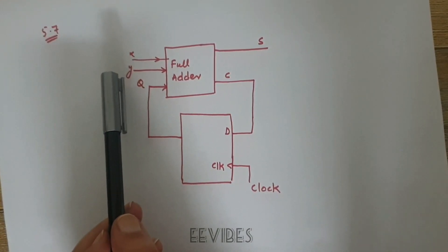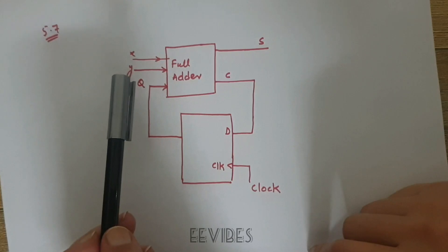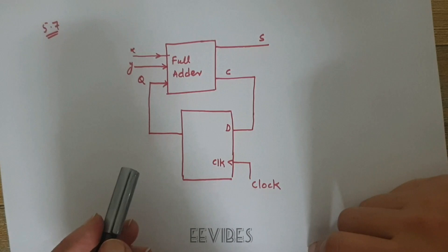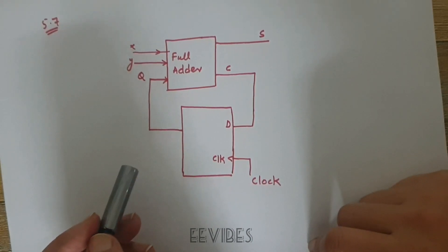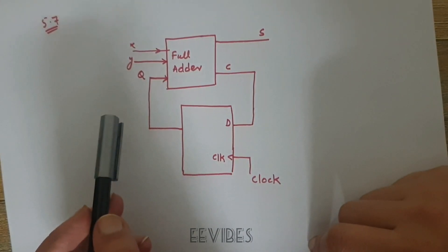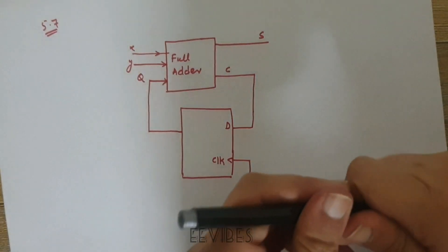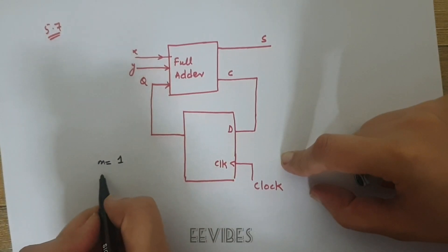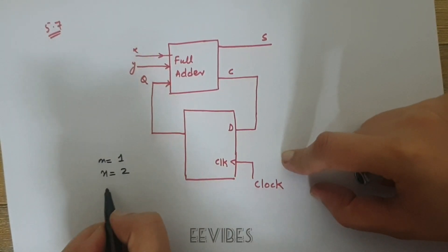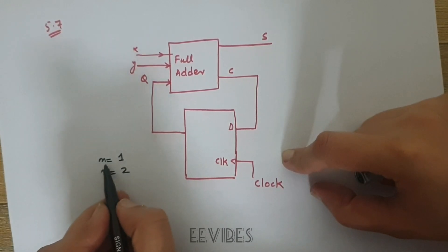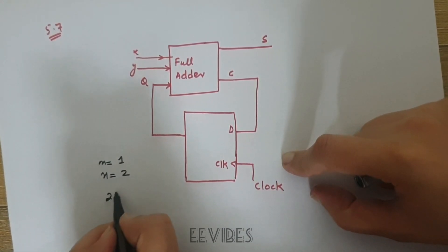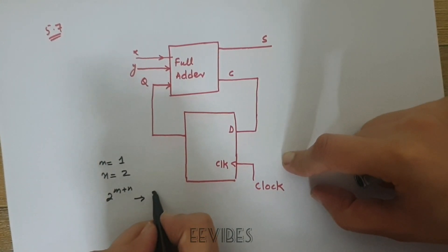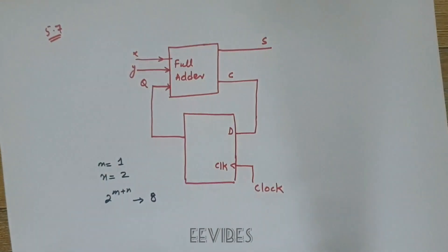To analyze the operation of this sequential circuit, we need to construct the state table and the state diagram. Starting with m equal to the number of flip-flops: m equals 1, and the number of inputs n equals 2. For m flip-flops and n inputs, we have 2 raised to the power of m plus n rows in the state table, which equals 8 in this case.